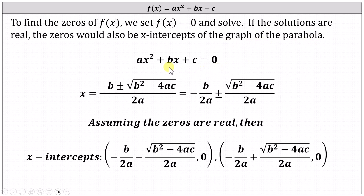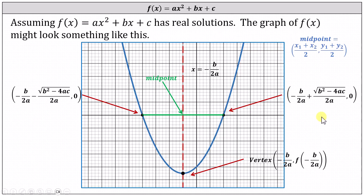Setting f(x) equal to zero, we have the equation ax² + bx + c = 0, which we can solve using the quadratic formula. Using the quadratic formula in the form shown on the right, if we assume the zeros are real, then the graph of the parabola would have x-intercepts as expressed below, and the graph might look something like this.